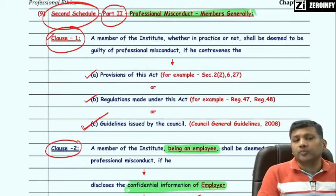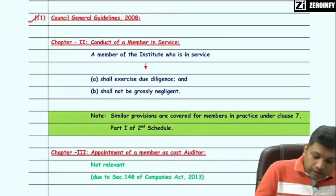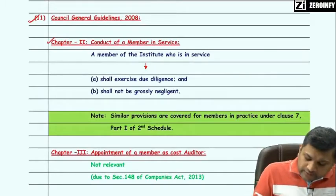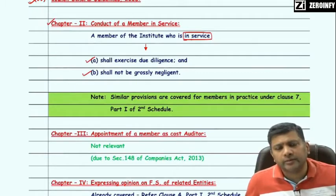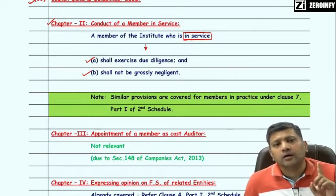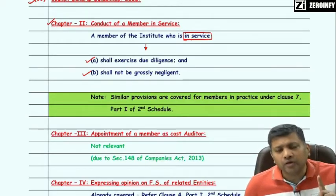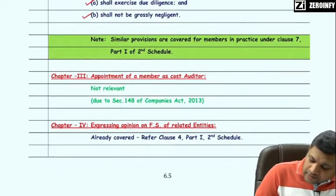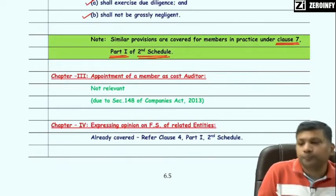The Council Guidelines are divided into various chapters. Chapter 2 states that a member of the Institute who is in service shall exercise due diligence and shall not be grossly negligent. Similar provisions are covered in Clause 7, Part 1 of Second Schedule for a practicing member.